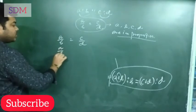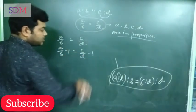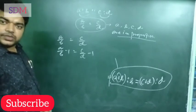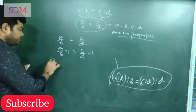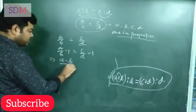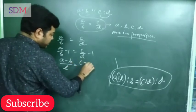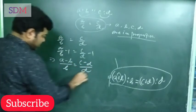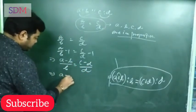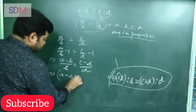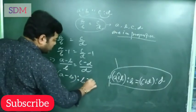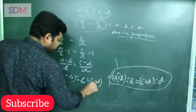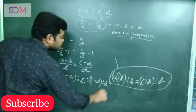So, A by B minus 1 equal to C by D minus 1. That one minus one. Okay? That's A minus B by B equal to C minus D by D. Ready? A minus B is to B equal to C minus D is to D. Clear?